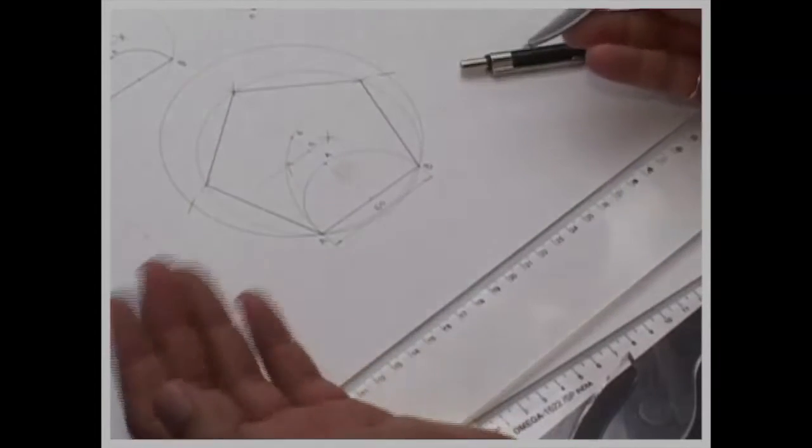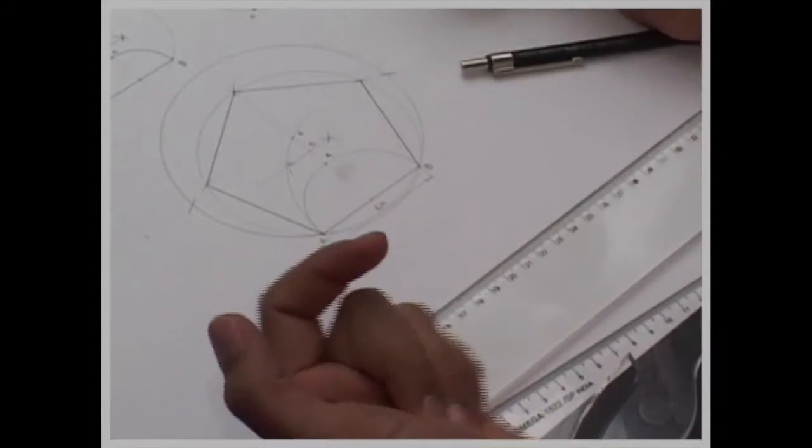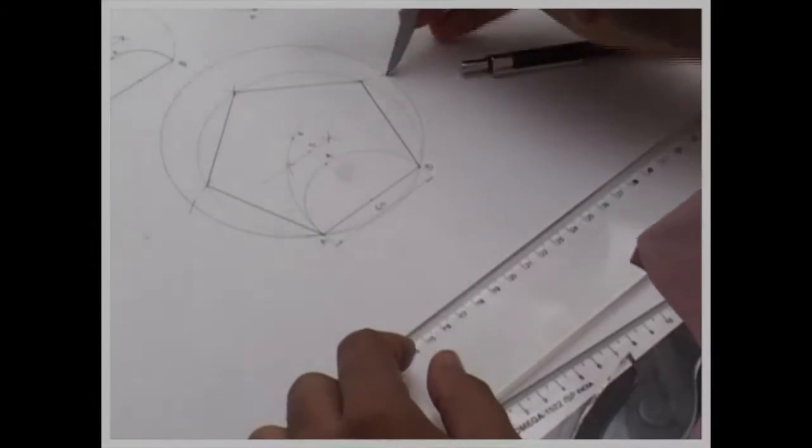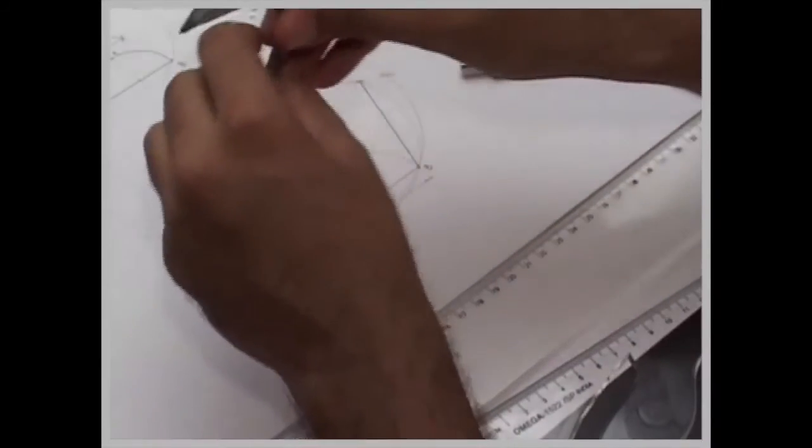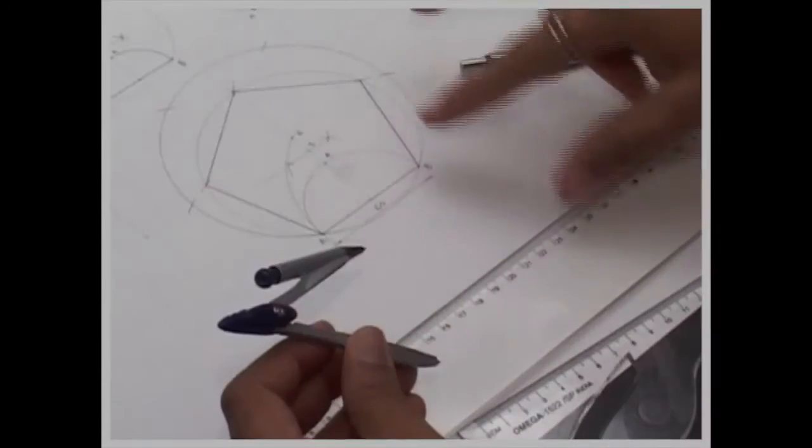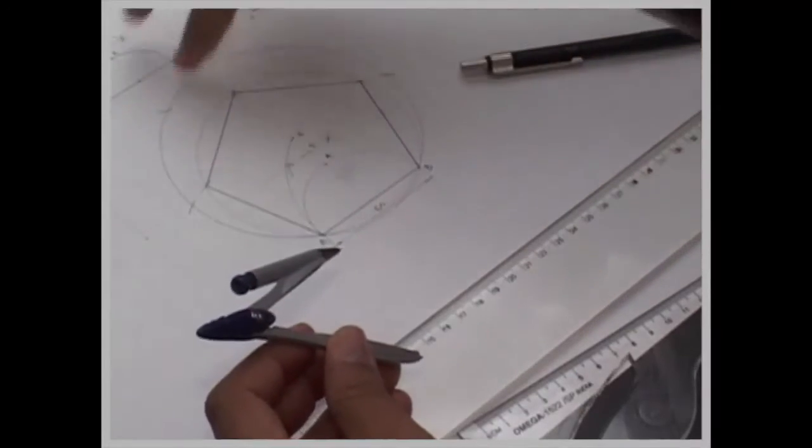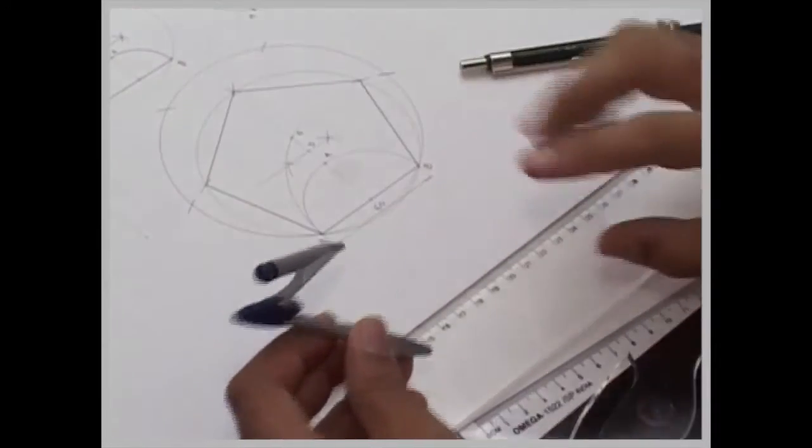Now see why we are doing it on left and right both, to minimize the error. Never go 1, 2, 3, 4, 5, never go that way.